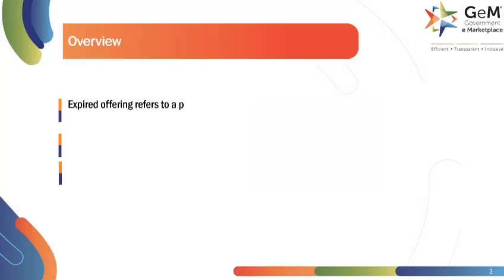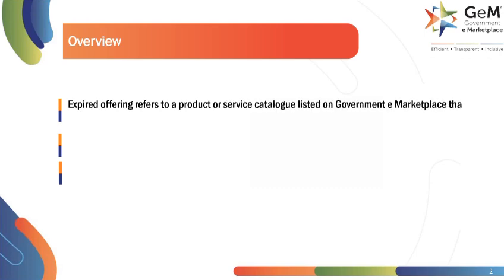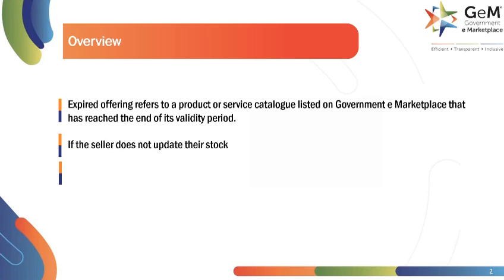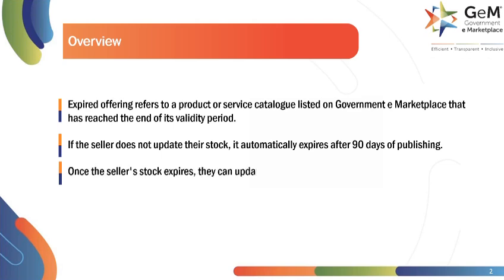Expired offering refers to a product or service catalog listed on Government eMarketplace that has reached the end of its validity period. If the seller does not update their stock, it automatically expires after 90 days of publishing. Once the seller's stock expires, they can update their stocks by using this functionality. Now, let's look into the process of updating the stocks for an expired offering.